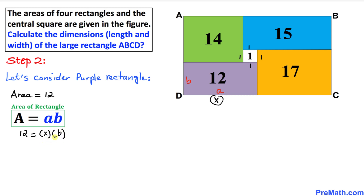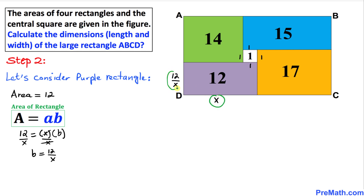We solve for B by dividing both sides by X, giving B = 12/X. So the dimensions of this purple rectangle are X and 12/X, and multiplying them confirms the area is 12.